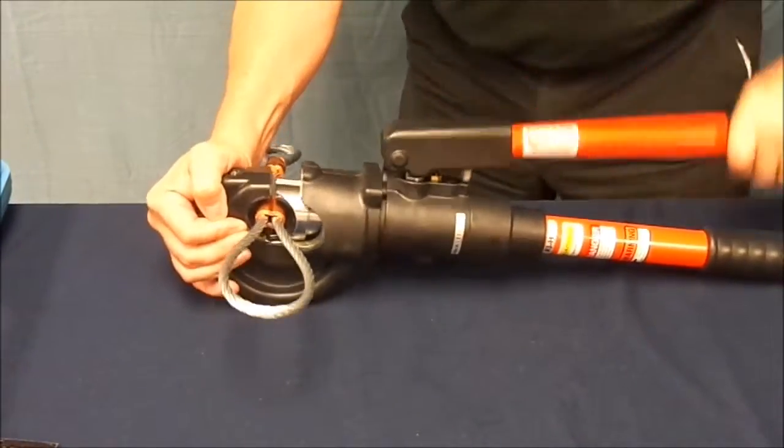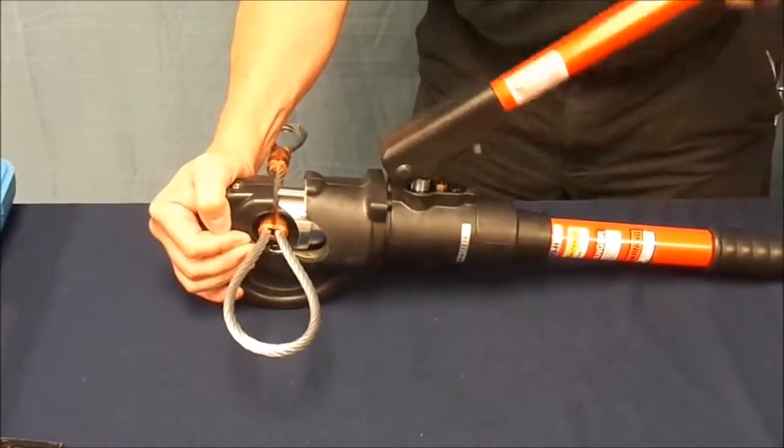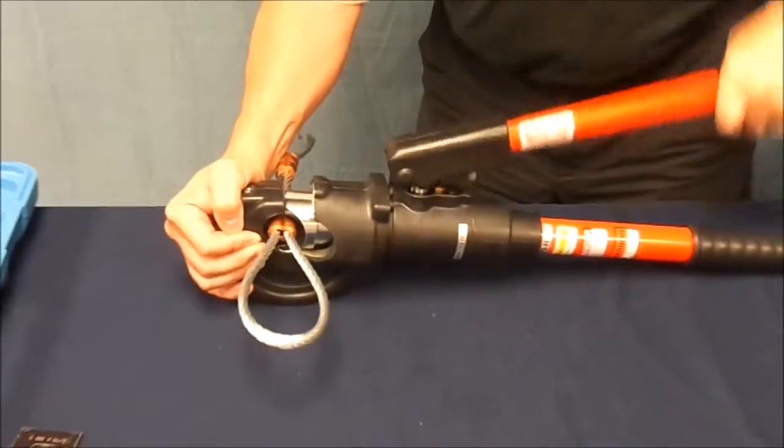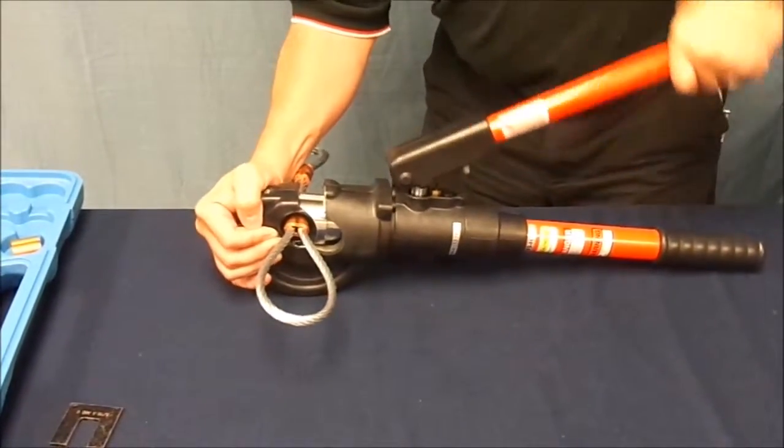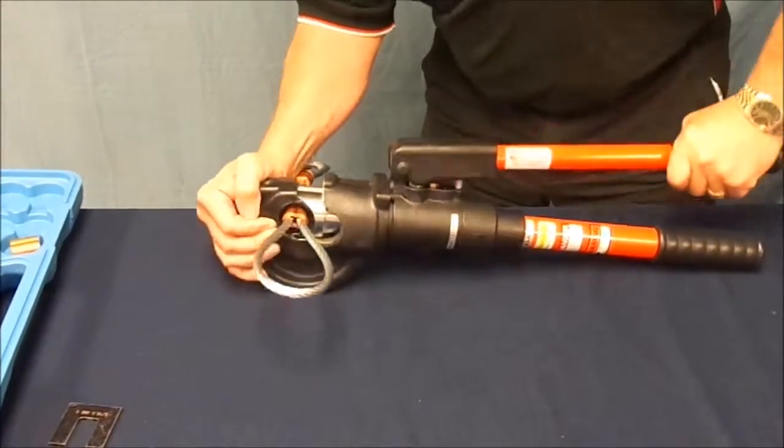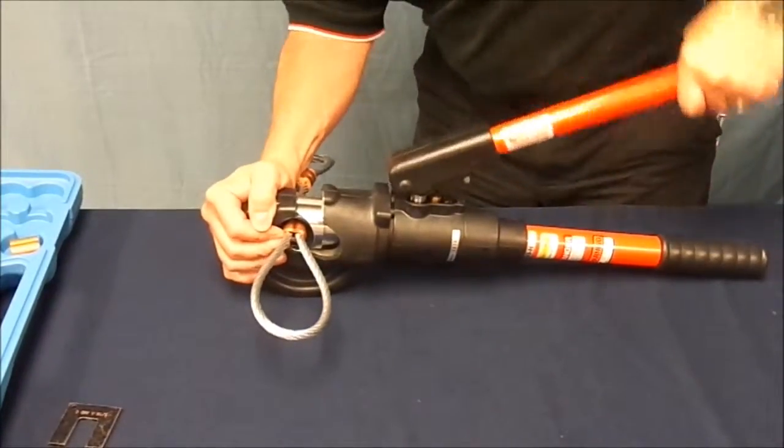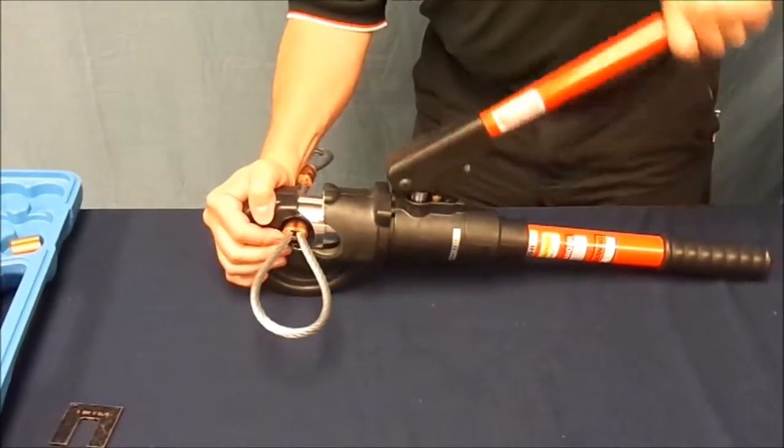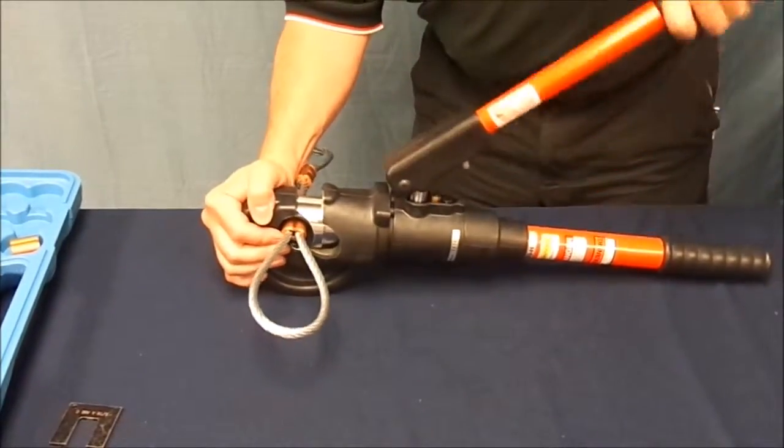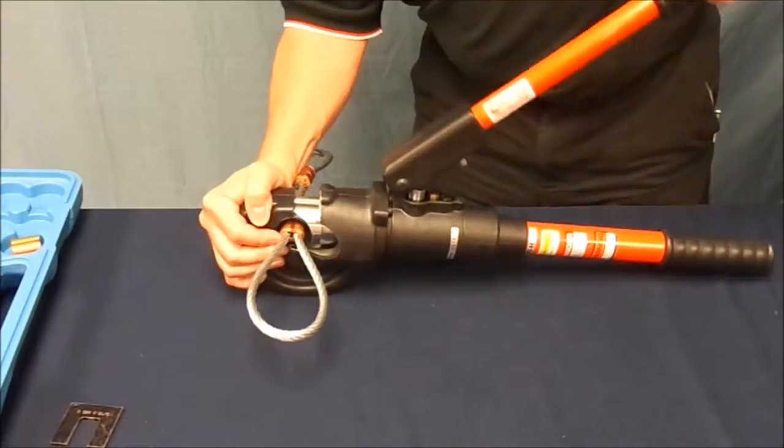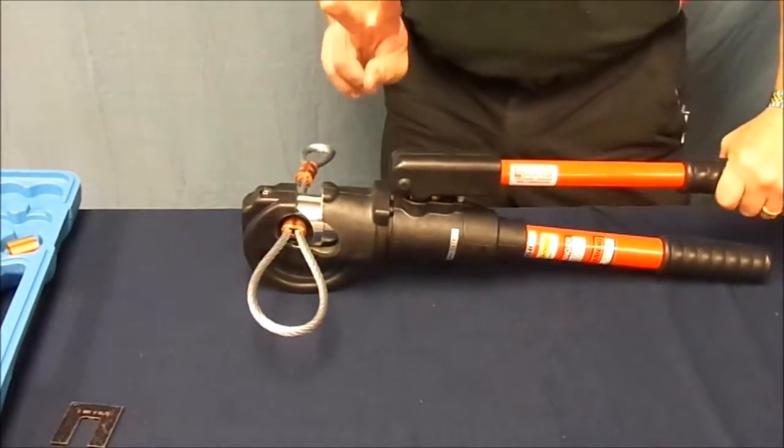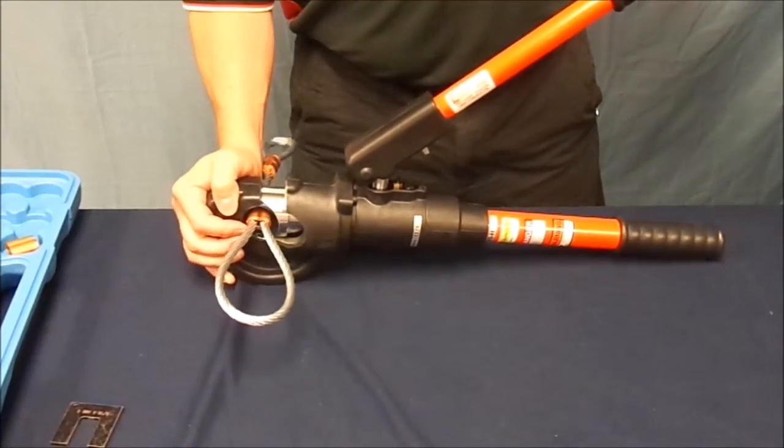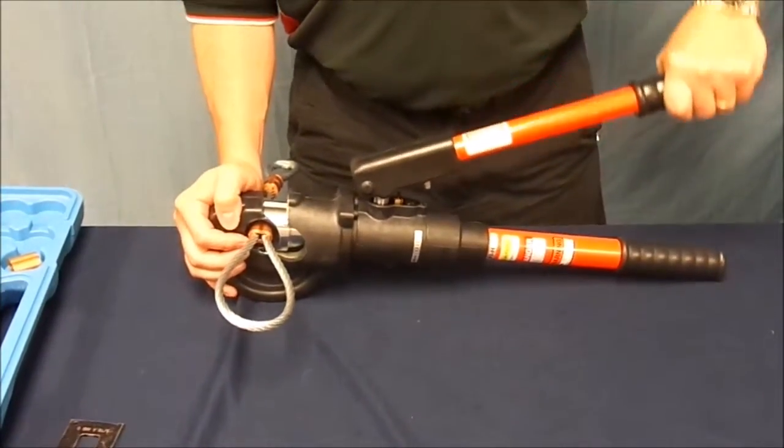This sound indicates that the first stage has been bypassed. This will indicate the swage is complete. Release the pressure by twisting the pump handle clockwise while holding the handle in the other side.